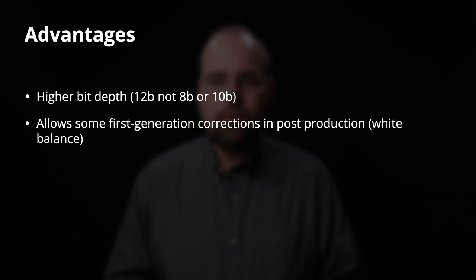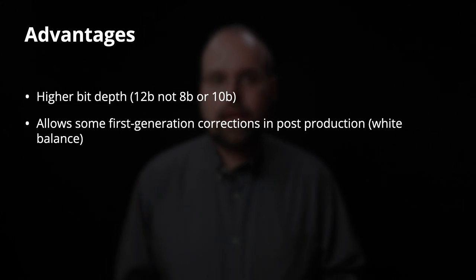Raw is probably going to be your highest quality option on the R5, at least assuming your post-processing software can actually make good use of it. The advantages come down to quality: it's a much higher bit rate than any other option the camera supports, and it's stored at a higher bit depth — 12 bits, not 8 or 10, which are what the other compressed options use. And because pixel values aren't adjusted in camera for things like color curves or white balance, those adjustments when you make them in post are first-generation corrections.